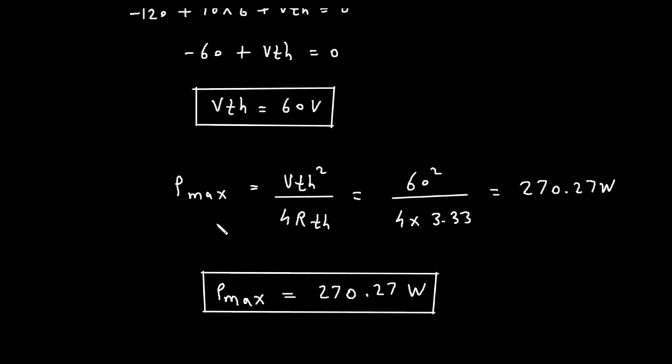We now have both values needed to calculate the maximum power. VTH is 60 volts and RTH is 3.33 ohms. Let's use the maximum power formula, Pmax equals VTH squared divided by 4 times RTH. We substitute our values into this formula. Pmax equals 60 squared, divided by the product of 4 and 3.33. First, let's calculate the numerator, 60 squared, which is 60 times 60, equals 3600. Next, let's calculate the denominator, 4 times 3.33 equals 13.32. So, Pmax is equal to 3600 divided by 13.32. Performing this division gives us a result of approximately 270.27.